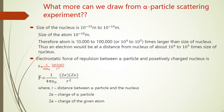Therefore, the atom is 10,000 to 100,000 times (10⁴ to 10⁵) larger than the size of the nucleus. Hence, the distance between the electron and the nucleus is about 10⁴ to 10⁵ times the size of the nucleus.